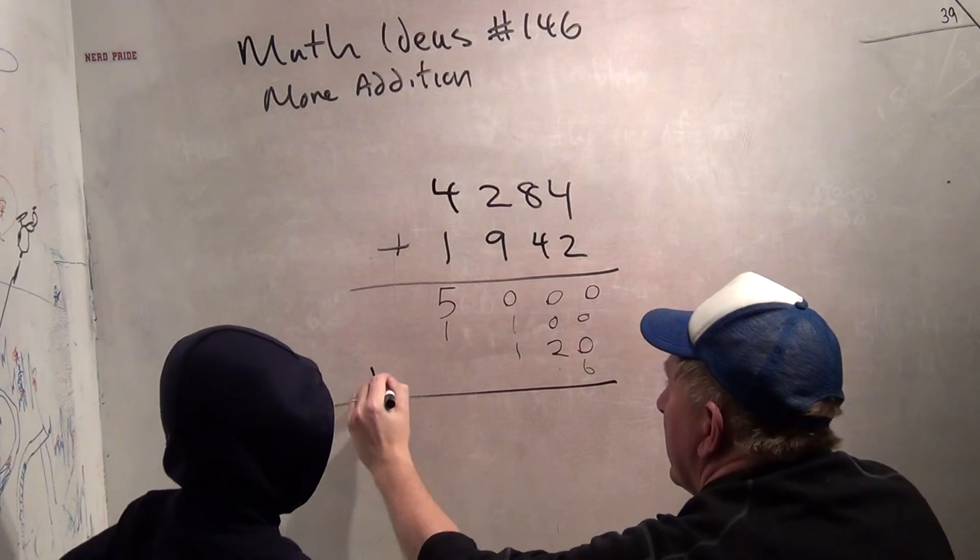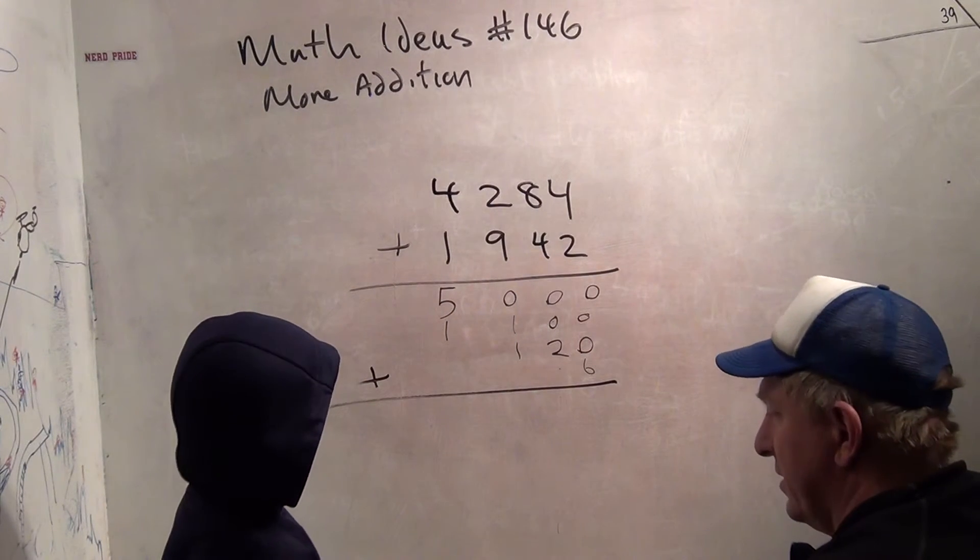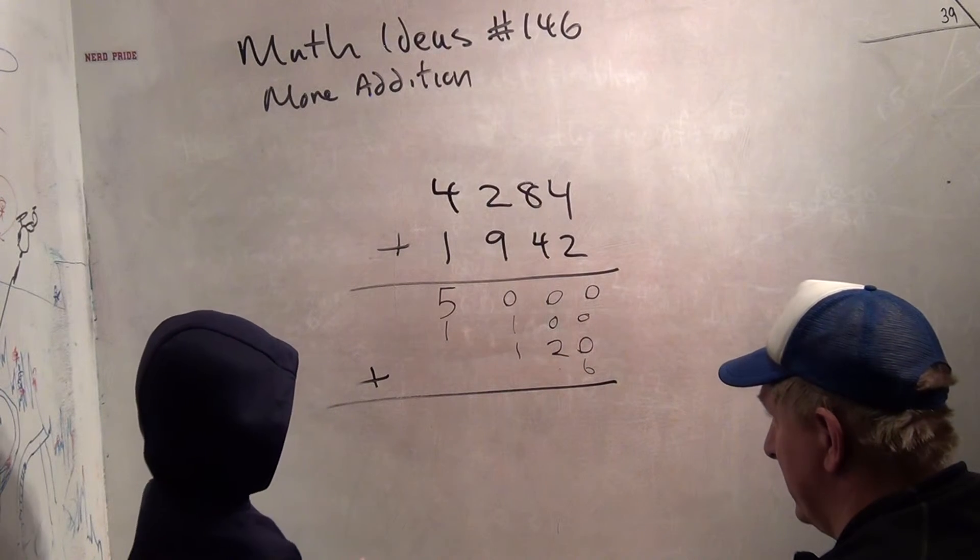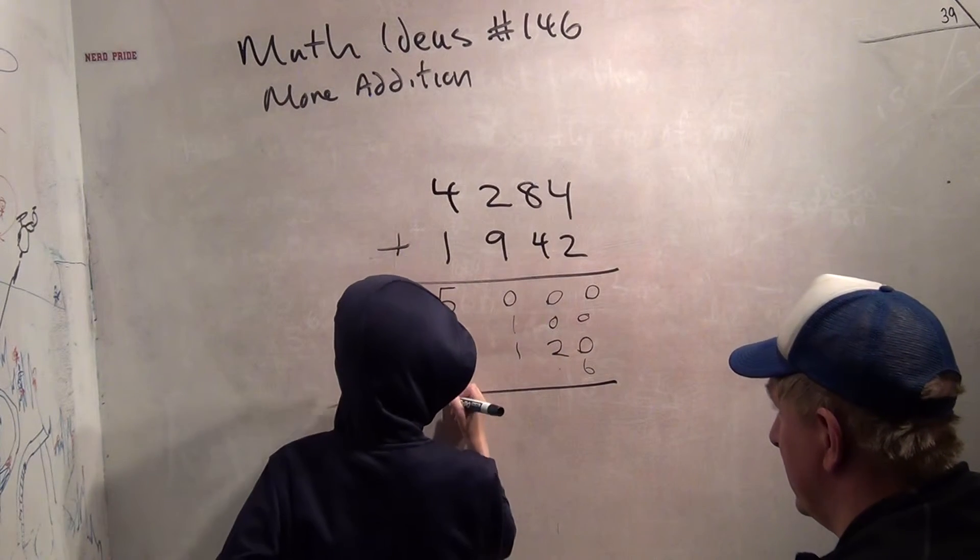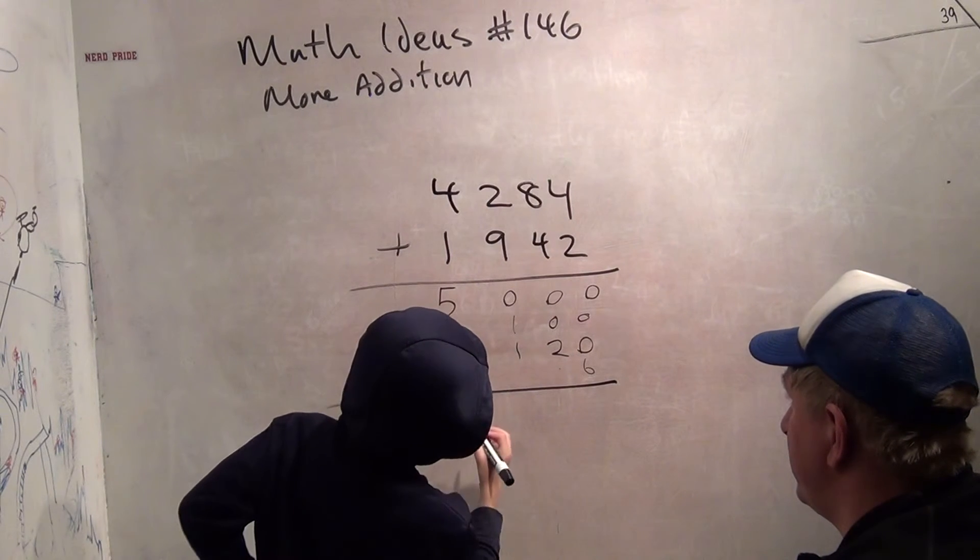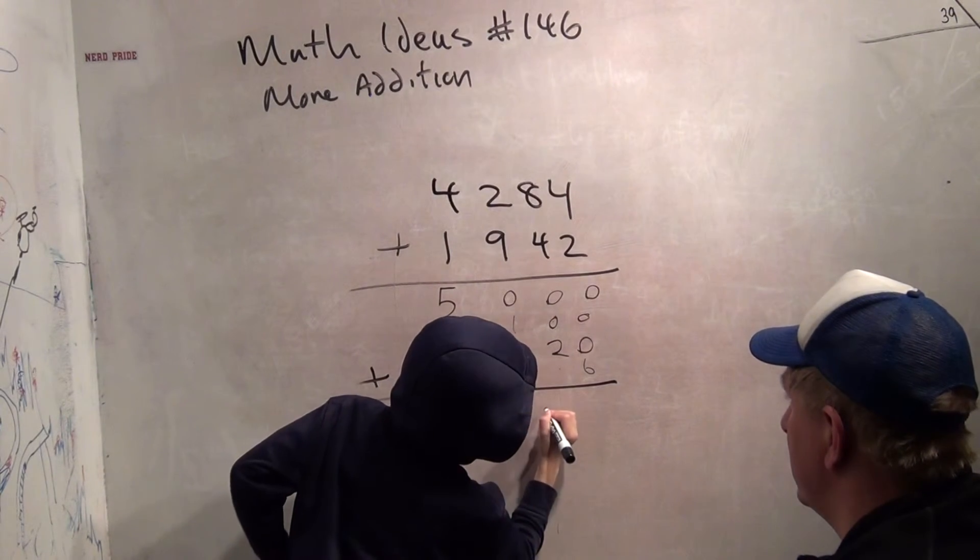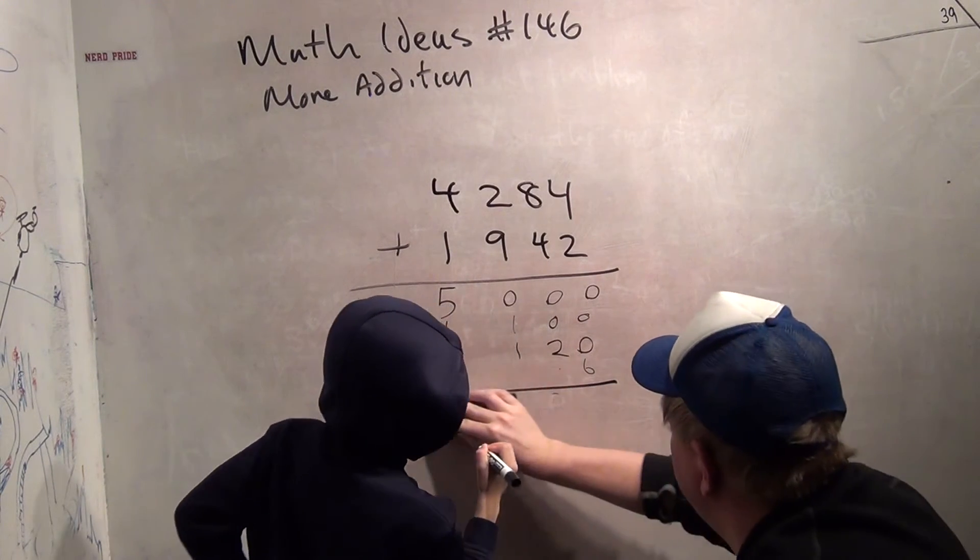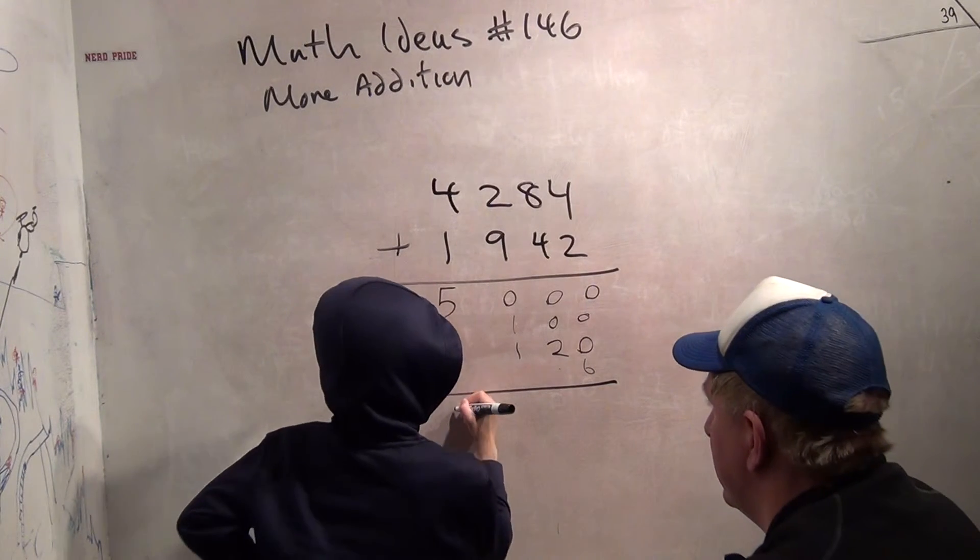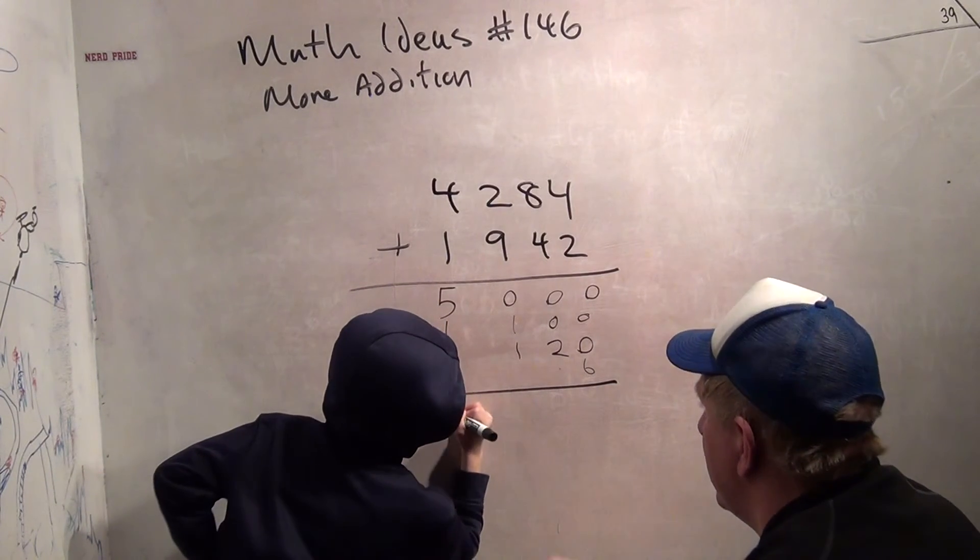Now we have to add all these up. 5,000 plus 1,000 is 6,000. Just go ahead and add them here. Sorry, this one turned out to be a little trickier than I thought. So it's 6,000.